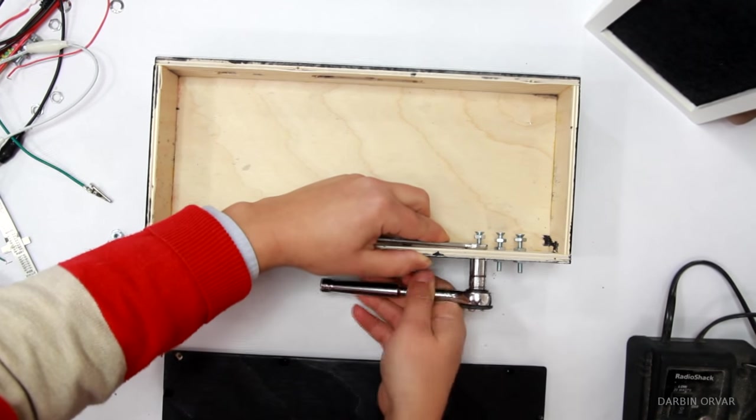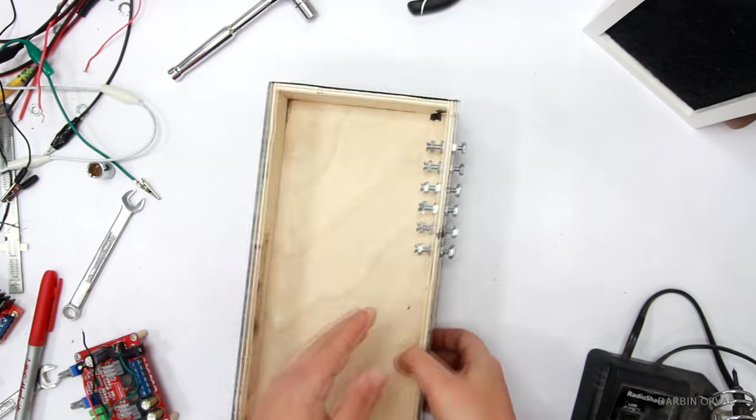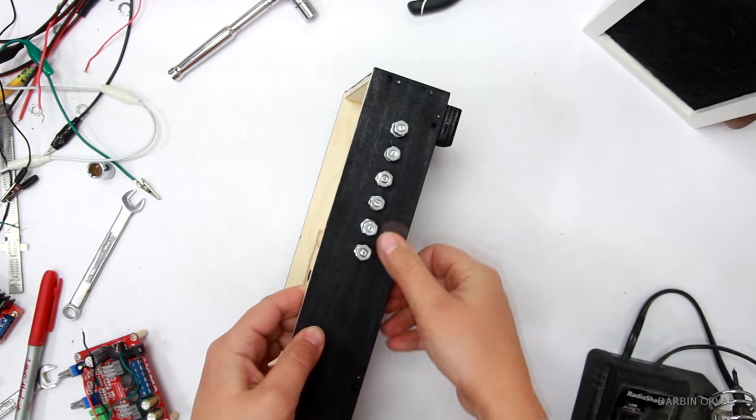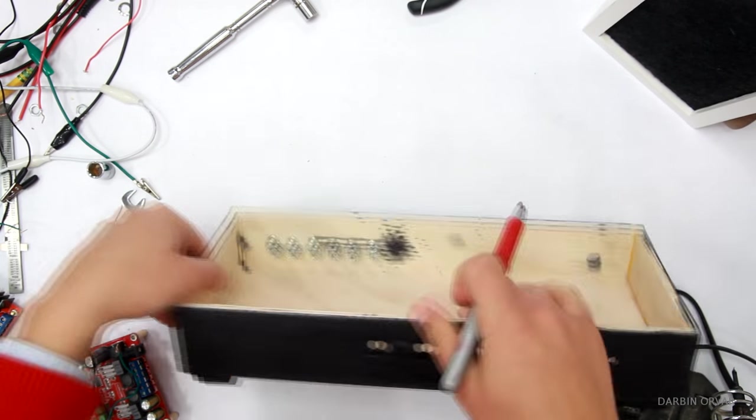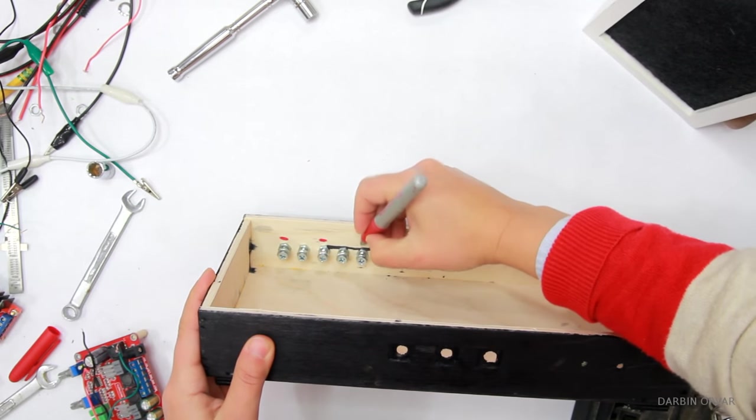Two on the inside and two on the outside of the box. So securing those in place. And to make sure I don't get confused, I'm marking out which one will be positive with a red marker.